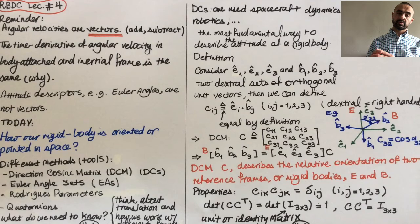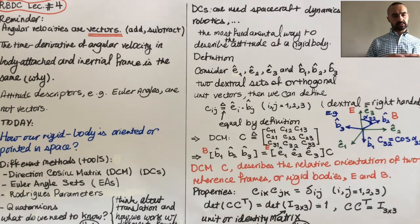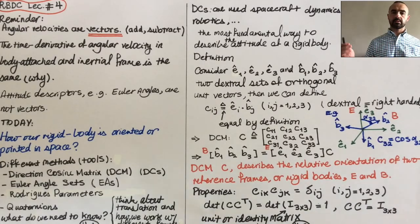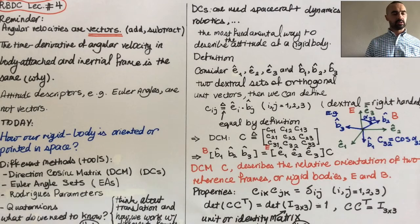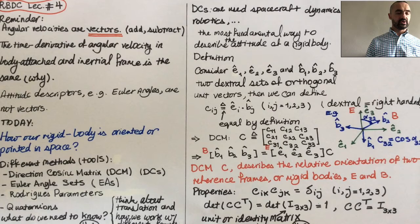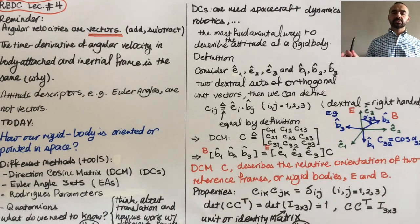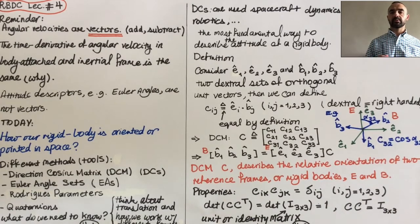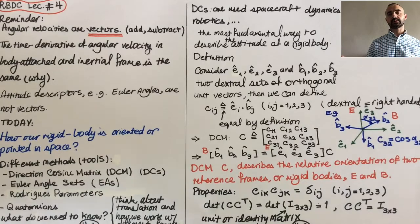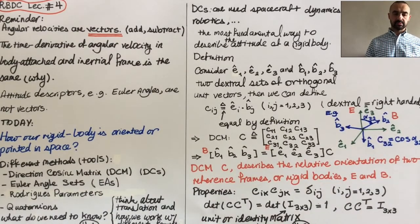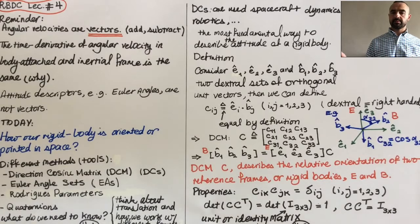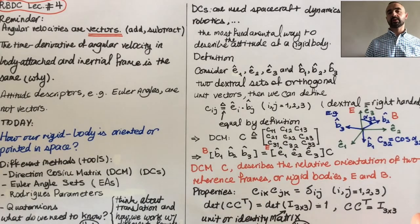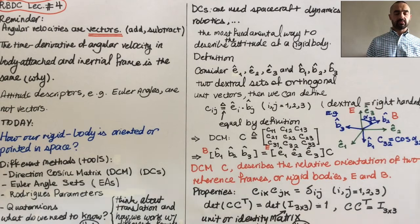We also talked about time derivative of different vectors in two frames which are rotating with respect to each other. Now if you recall, and if not you can go back and watch the other video about how we differentiate vectors in two frames, there's an extra term. So we had time differentiation with respect to initial frame on the left hand side, and then we had time differentiation with respect to your body frame on the right hand side plus an extra term Omega cross your vector.